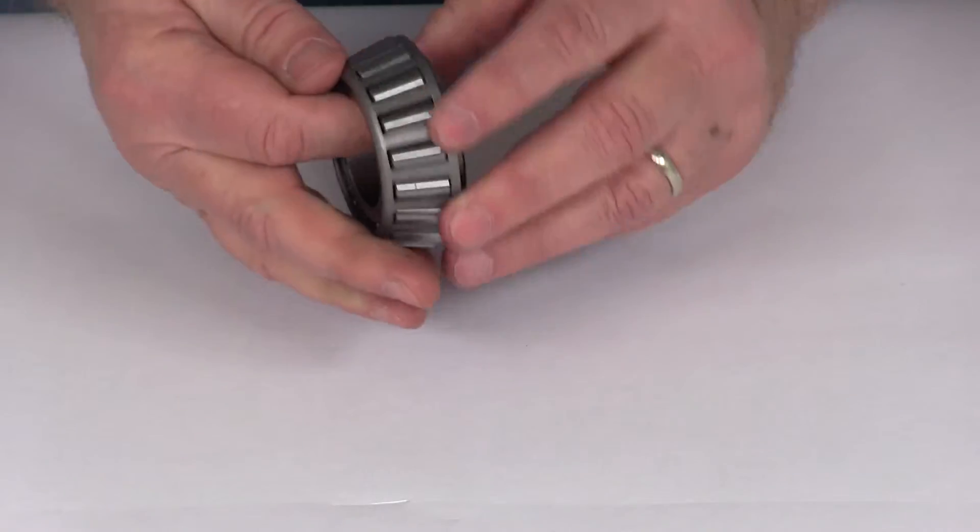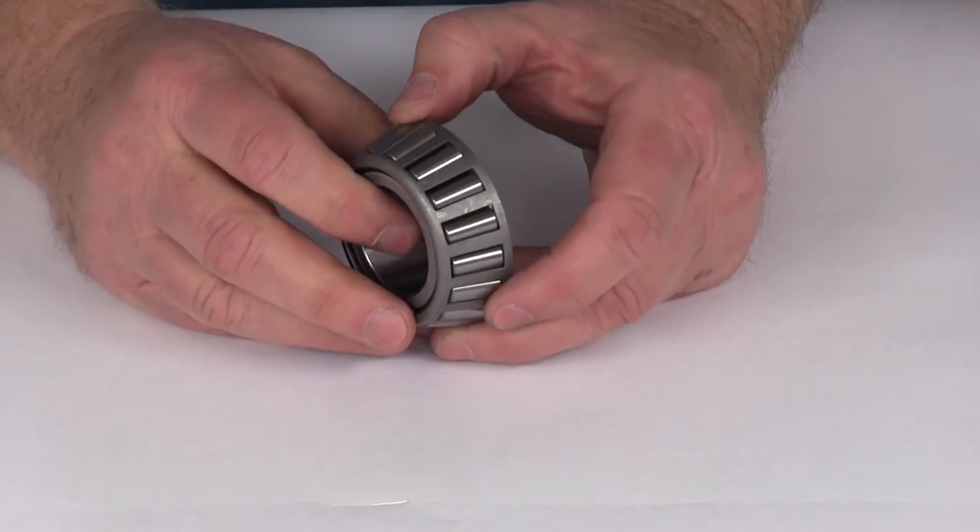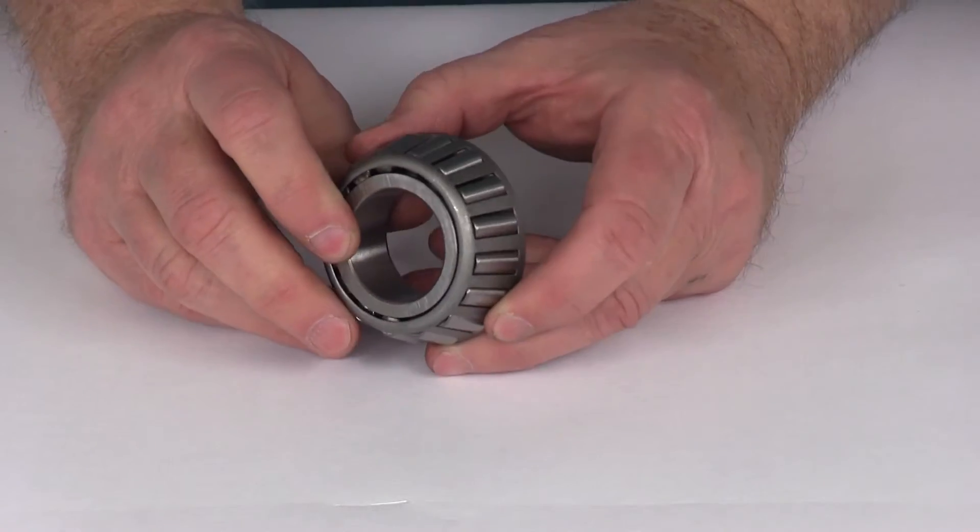The matching race that this bearing will sit in to rotate, we do sell that separately on our website, it's part number 02420.